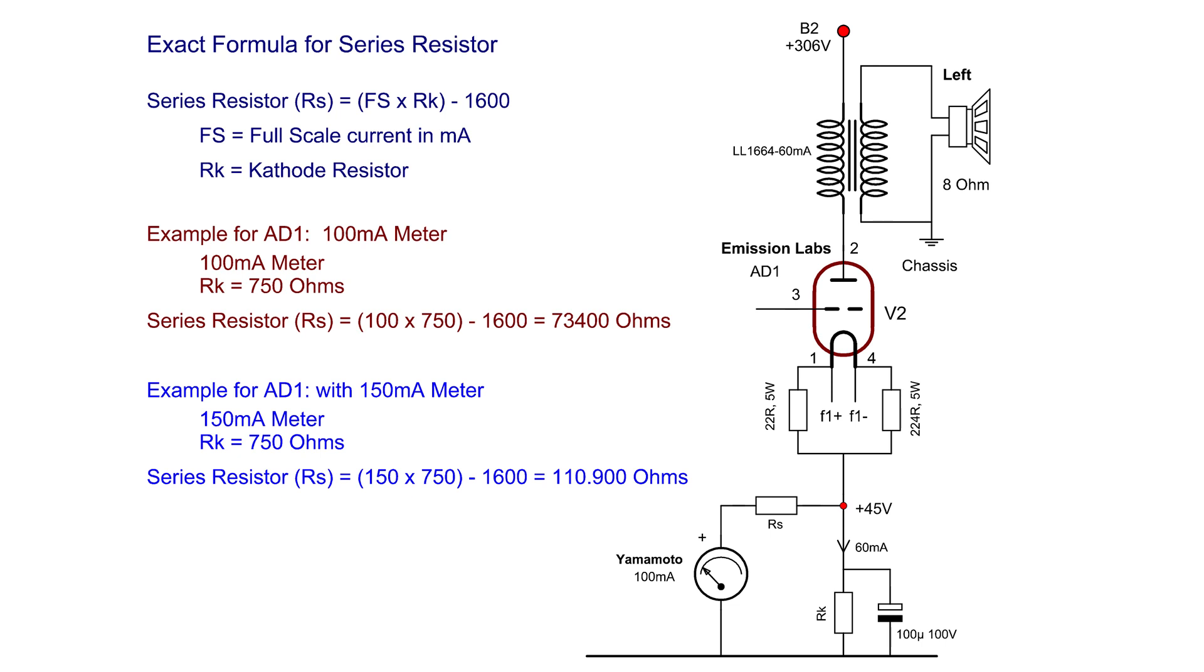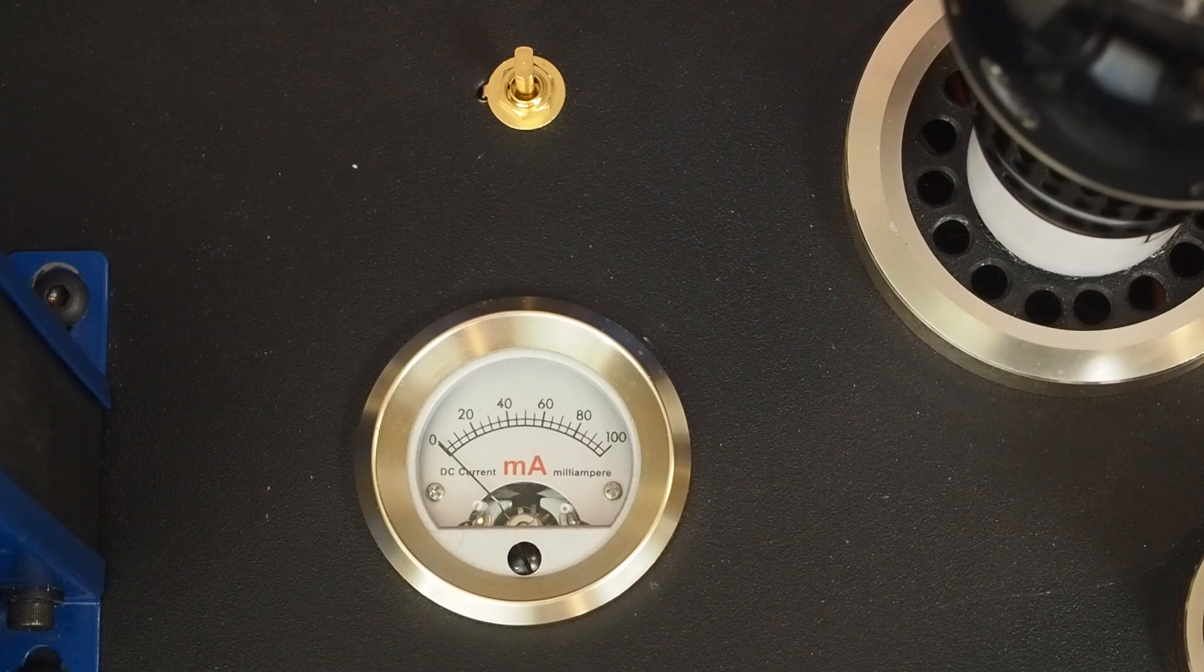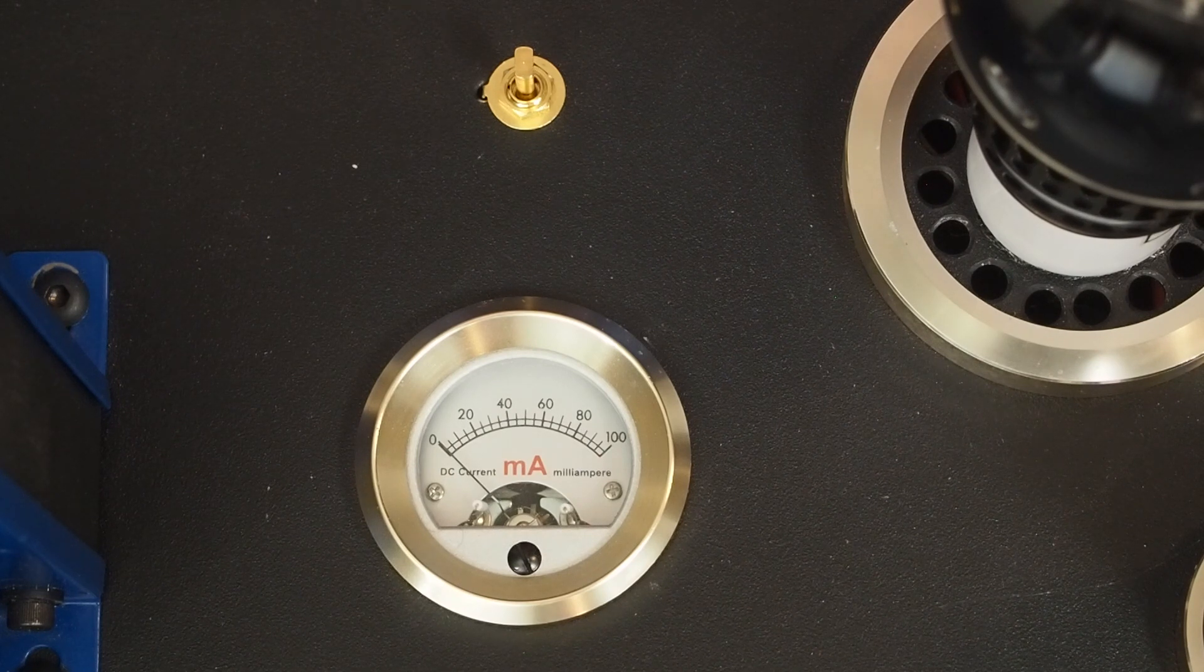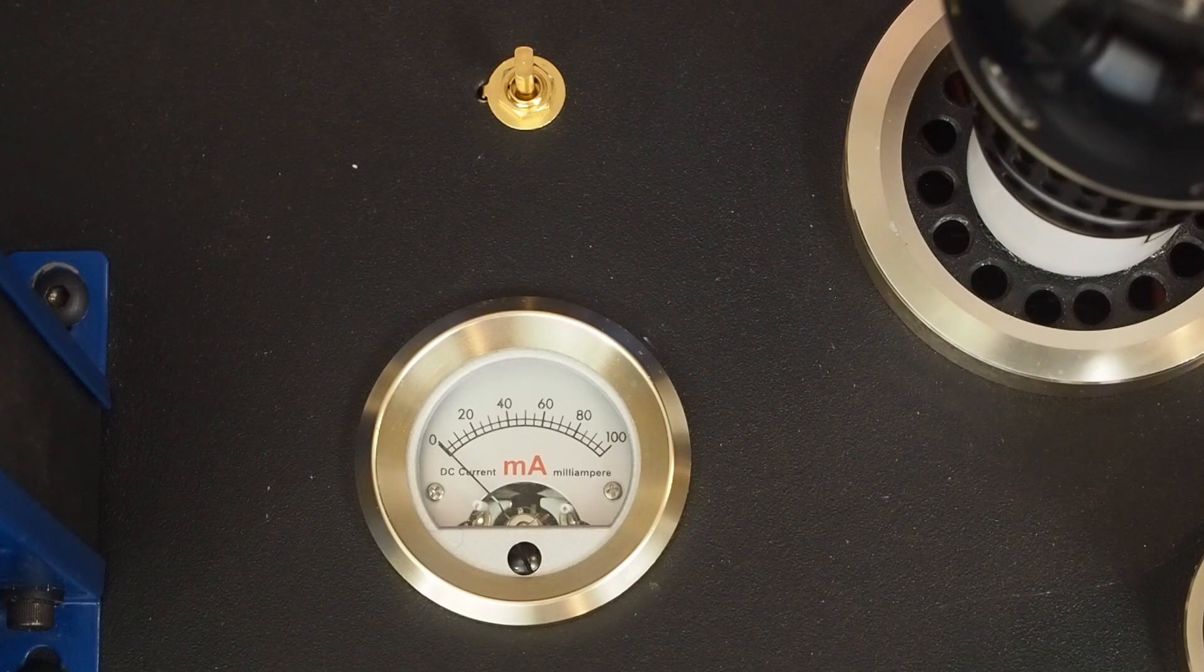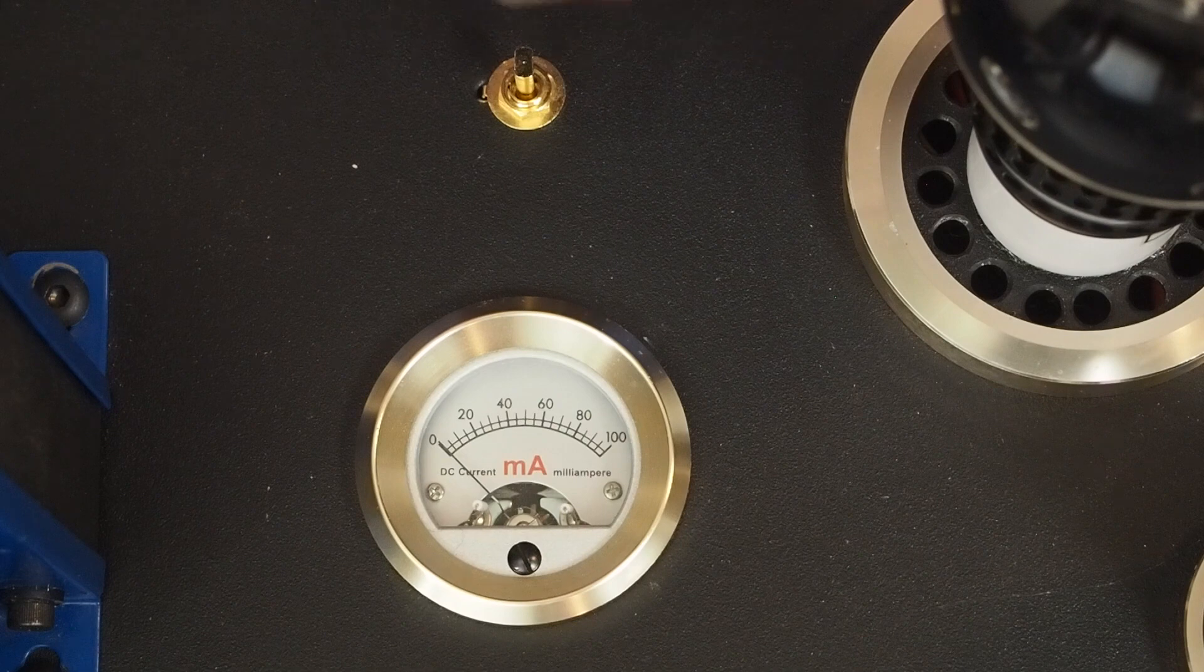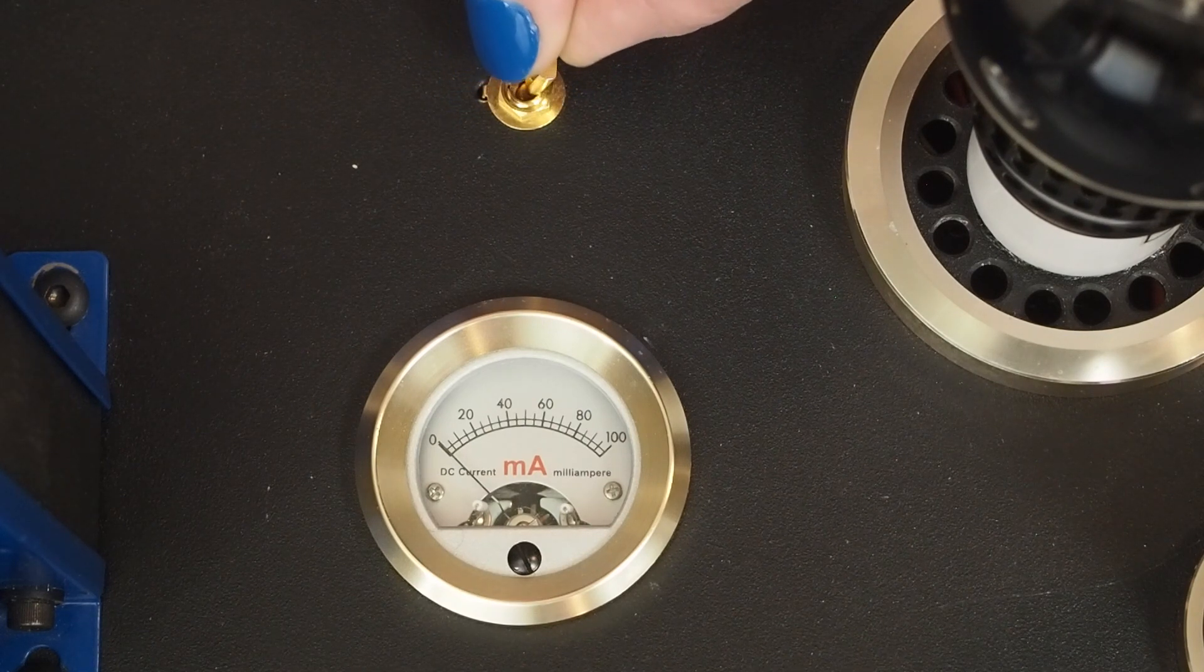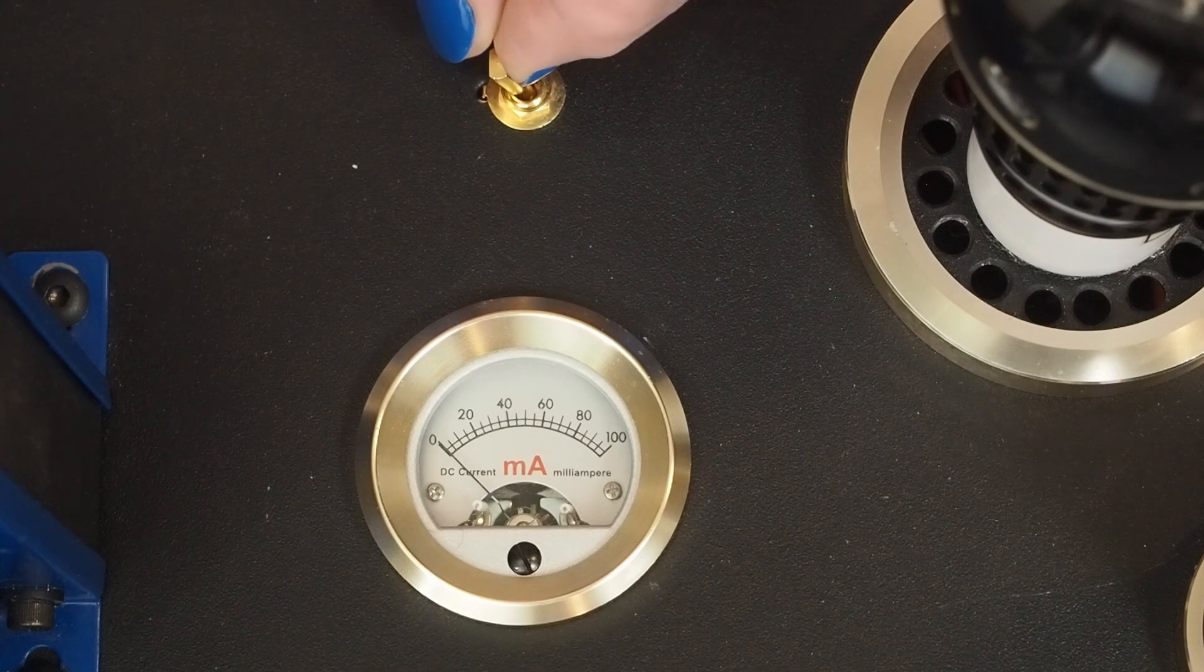I'm not sure if you guys know this, but you really don't want to put a milliamp meter full-time in series with the cathode resistor because the windings of the meter itself can affect the sound of the amp. Obviously, the way this one's made, when it's in the center position, it's not connected to anything and you can switch from one tube to the other tube.